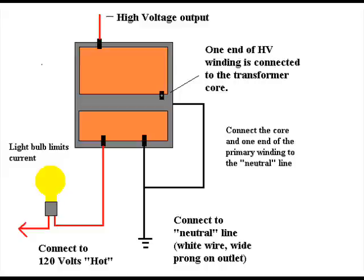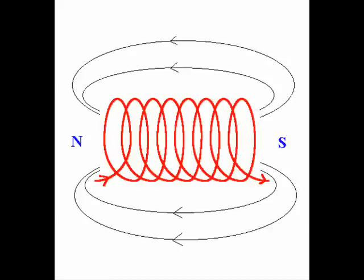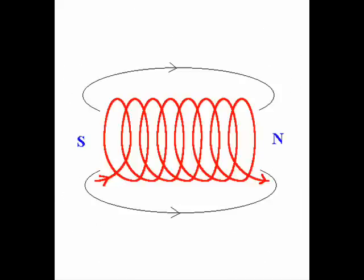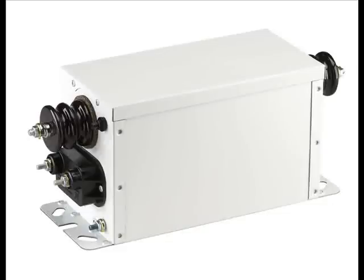Another method to limit current is to use inductance, and this seems to be the best way. If a big winding of wire, like a large choke, is put in series with a transformer, it will limit the current. This is because of what's known as inductive reactance. When alternating current is passed through a coiled wire, it generates a magnetic field that opposes some of the current. In this picture, I have several large chokes connected in series. With 120 volts, this limits the maximum current to about 8 amps. To power a Tesla coil, I would recommend using a neon transformer or a furnace ignition transformer.